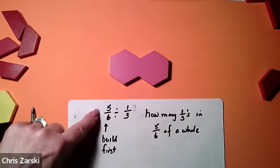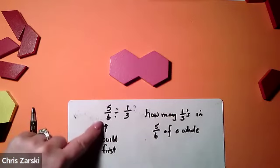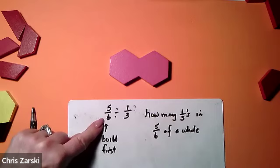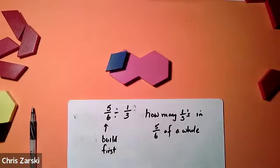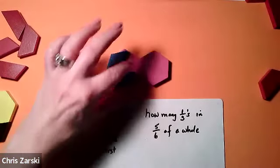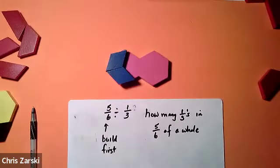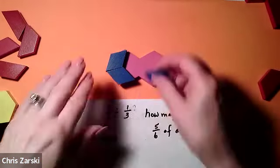When we're doing division, have them build the very first part. This is five sixths of a whole. So can they show me five sixths? We already know it's going to be the blue rhombus because I need six of those to make a whole, but it only wants five. That's all I'm building, is five sixths.